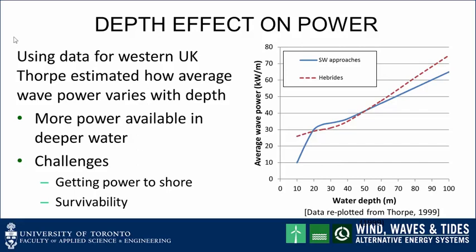Depth has an effect on power. This is some data for the Western UK. Thorpe estimated how the average wave power varies with depth, and you can see that it varies quite substantially. Clearly, more power is available in deeper water, but that does present challenges, one of which is getting power to the shore. Underwater power cables are very expensive, and further from shore, the more powerful the waves, but also in a storm they are more powerful, so survivability is an issue.